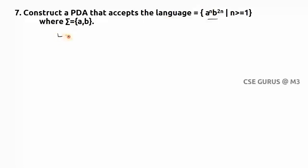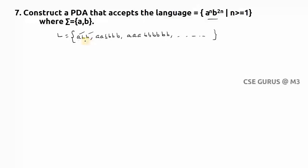The language L: if I take n=1, for a single a, 2 b's should come; for 2 a's, 4 b's come; for 3 a's, 6 b's come. One more thing to remember: the number of a's must be followed by b's — once you get b, you can never find a.